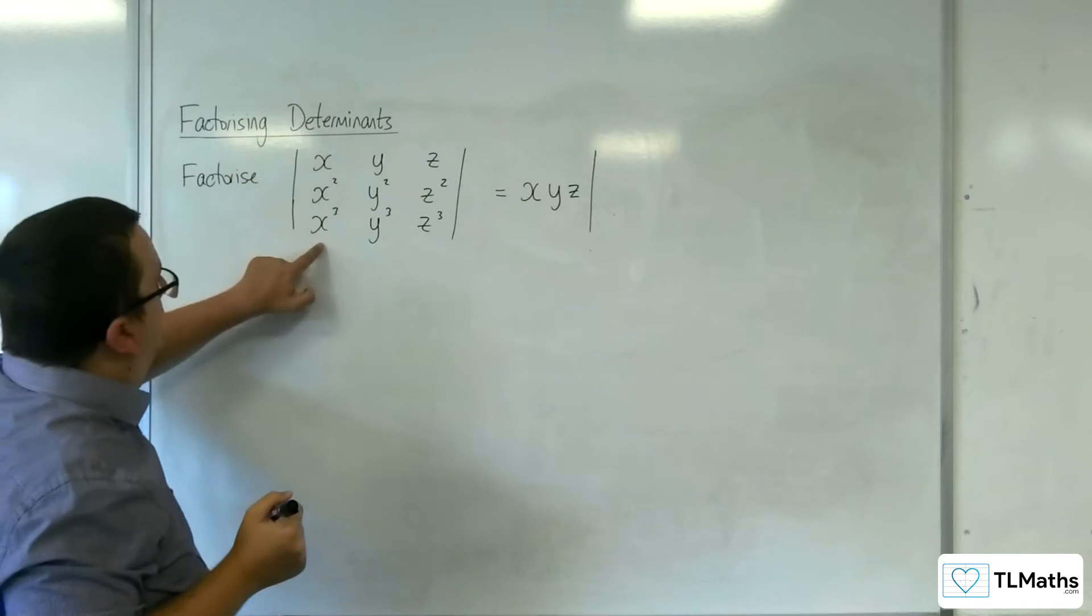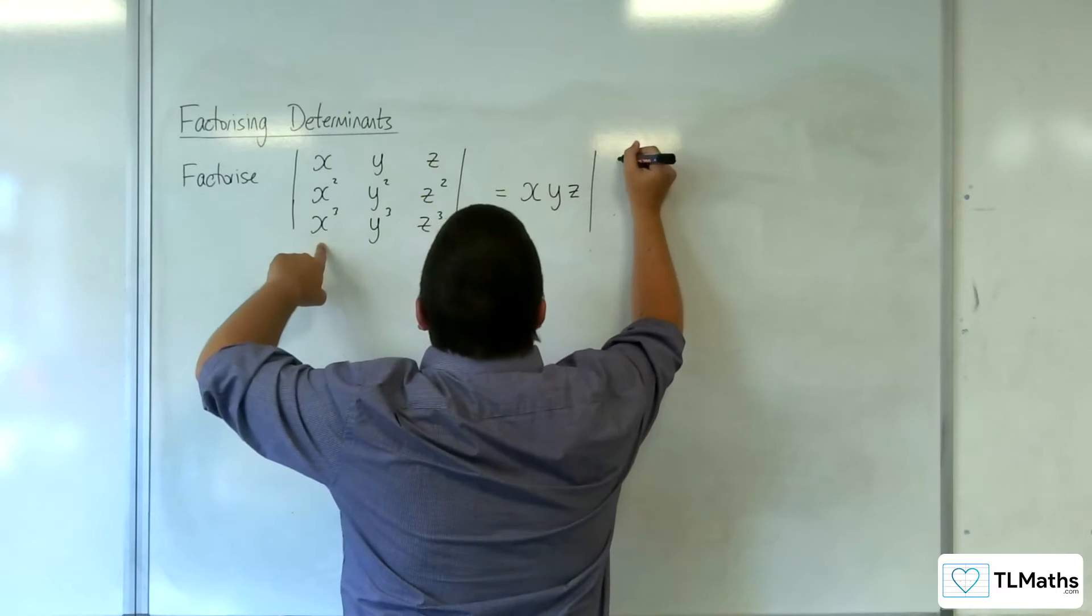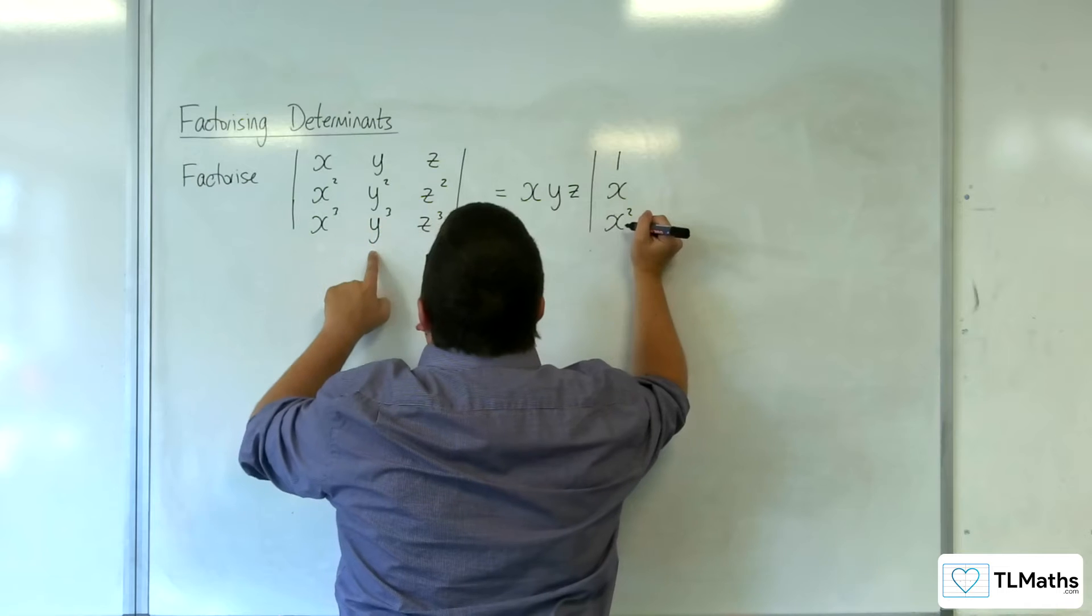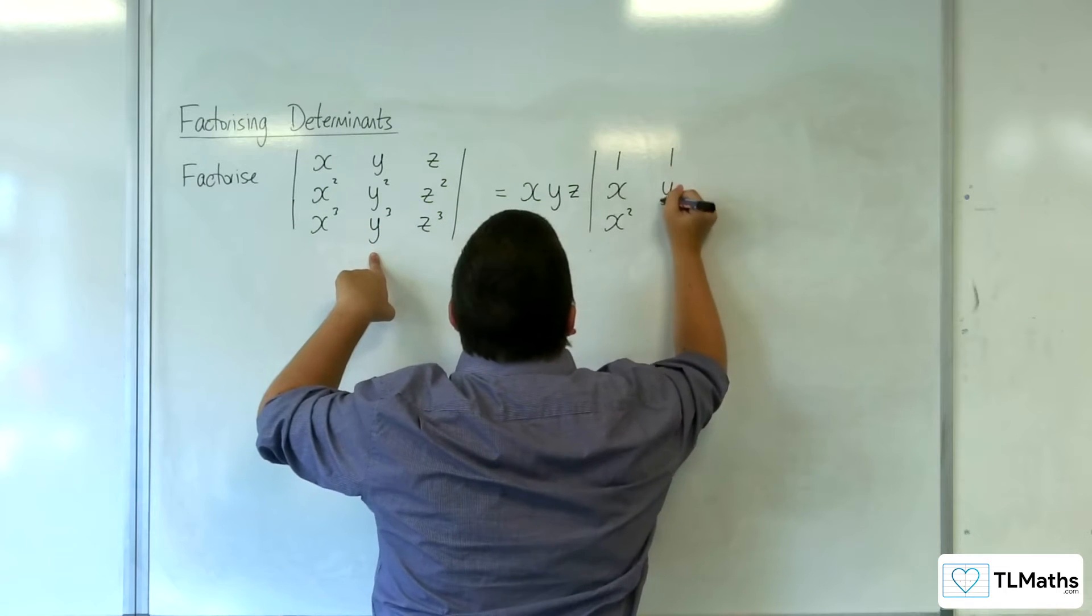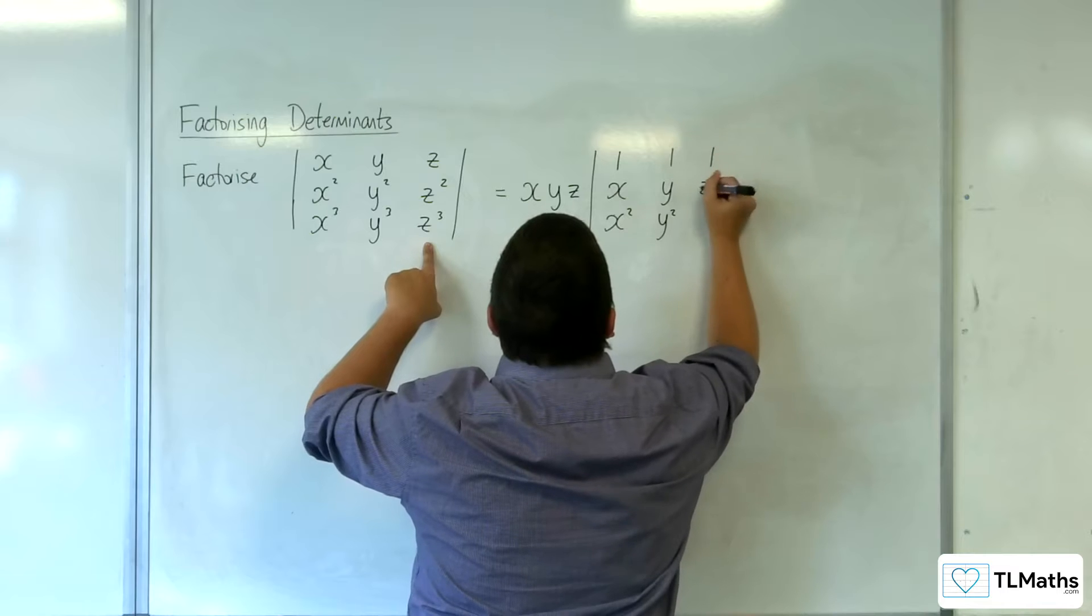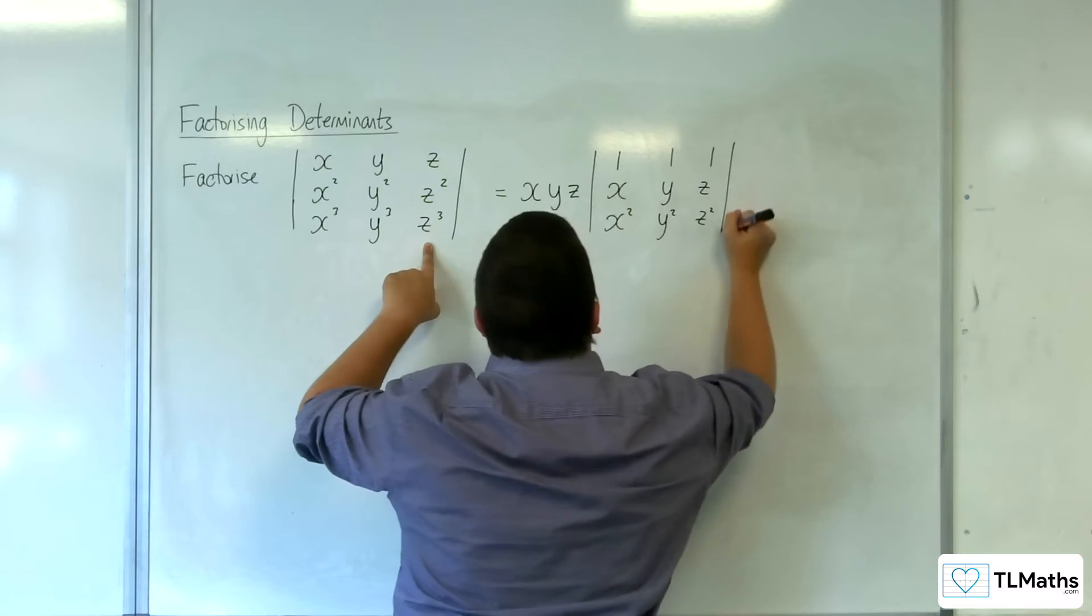So the first column will now be 1, x, x squared. The second column will be 1, y, y squared. And the third column will be 1, z, z squared.